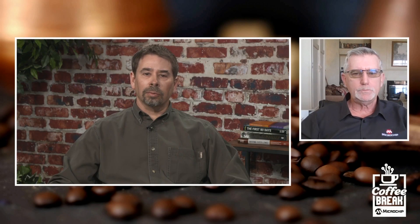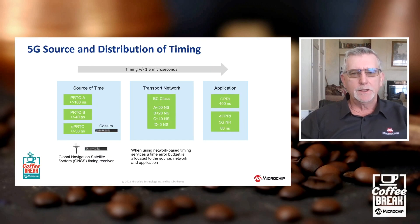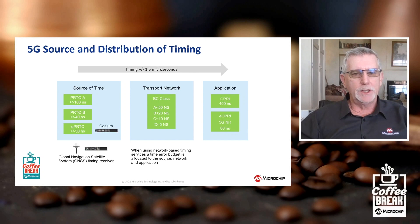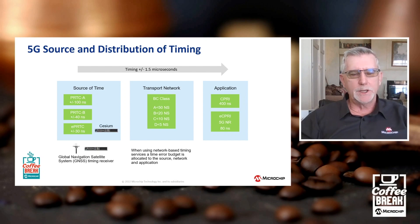In a 5G network there is a very stringent timing budget. When we use network-based timing solutions such as PTP, we allocate a timing error budget to the end-to-end applications. In 5G, the timing error is plus or minus 1.5 microseconds to absolute time, and we allocate it into three sectors: the source of time, the transport network, and the end application.